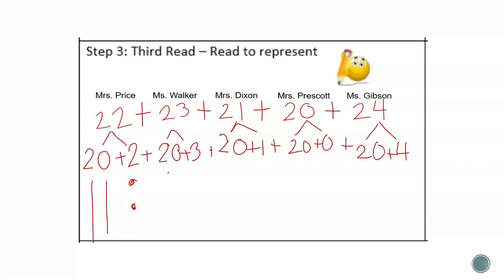To draw twenty-three, I need two tens and three ones. To draw twenty-one, I need two tens and one one.